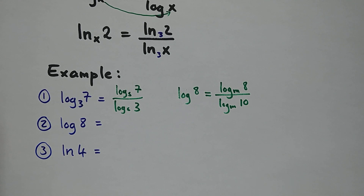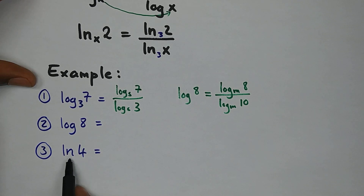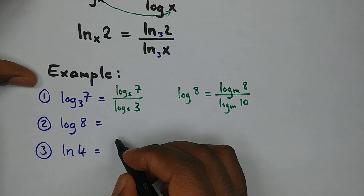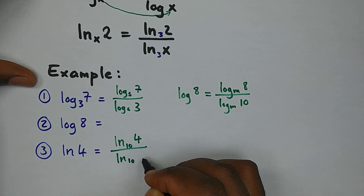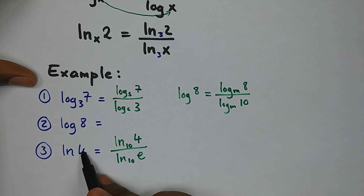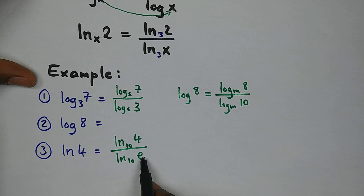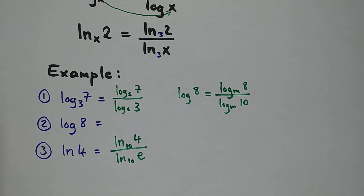For another example, changing the natural log to base 10: since the natural log is in base e, we write ln 4 over ln e using base 10 — the argument becomes the numerator and the base e becomes the denominator. So that's how we change the base. I've introduced the basic rules of logarithms. In the next video we'll look at how to simplify, expand, evaluate, and solve logarithm equations — make sure to catch it. Thank you very much.